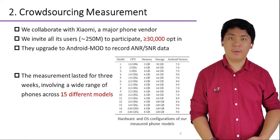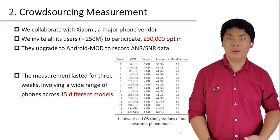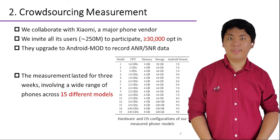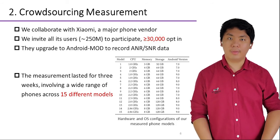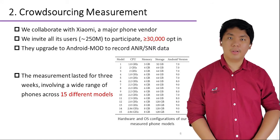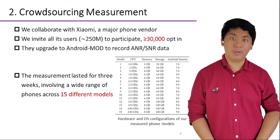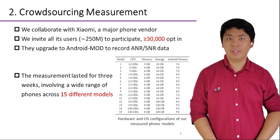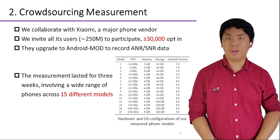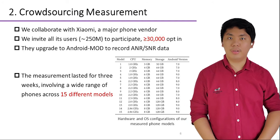In collaboration with a major phone vendor named Xiaomi, we invited their active users to participate in our measurement study. Eventually, over 30,000 users opted in by upgrading their systems to Android Mode. For three weeks, Android Mode monitored ANR and SNR events on opted-in users' devices and collected critical data. As a result, we captured a wide range of phones across 15 different device models and three Android versions.